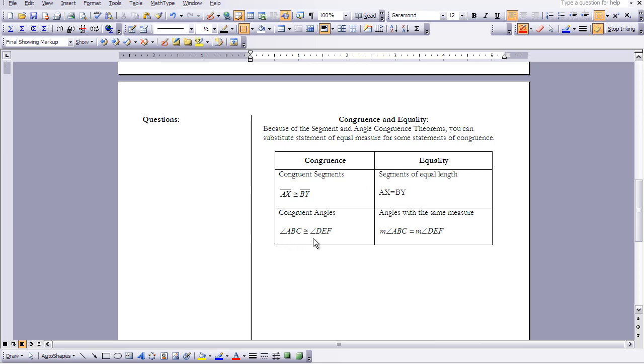Now with angles, we also use our congruent symbol if we want to show they're congruent, and we just show the angle symbol. So angle ABC is congruent to angle DEF. But if we're talking about equality, we want to show that they have the same measure. So then we put our little M in front, so the measure of angle ABC is equal to the measure of angle DEF.